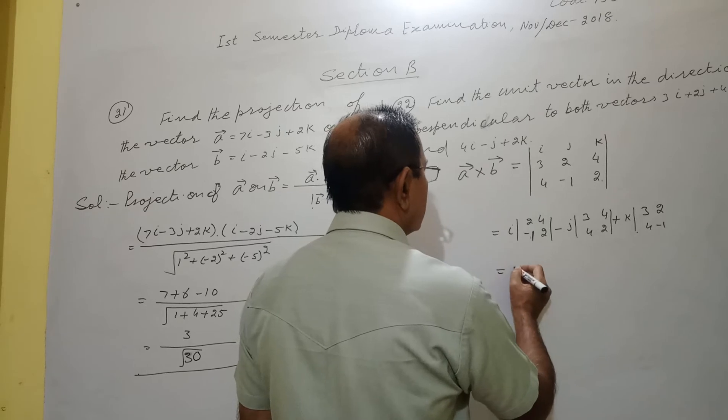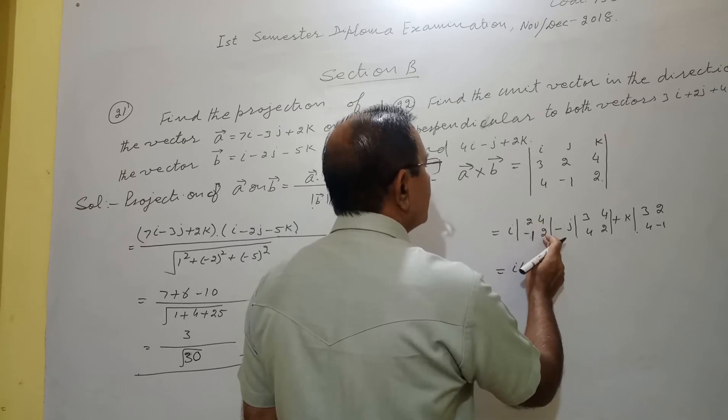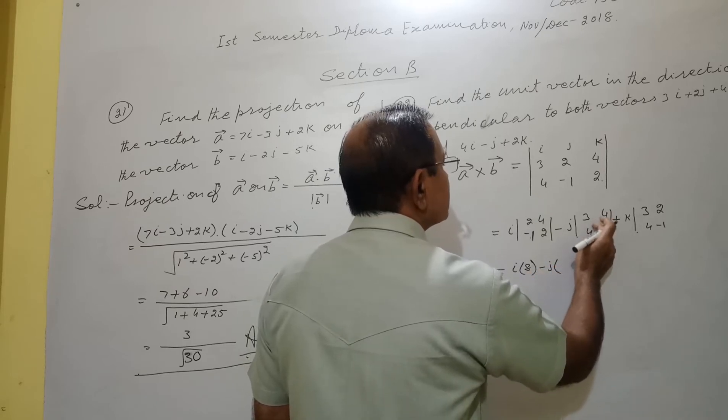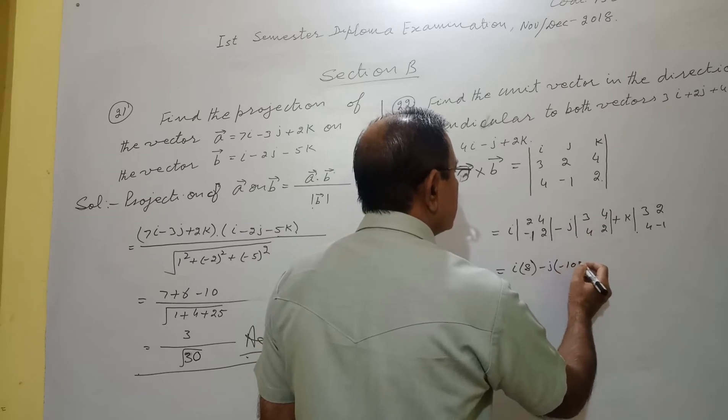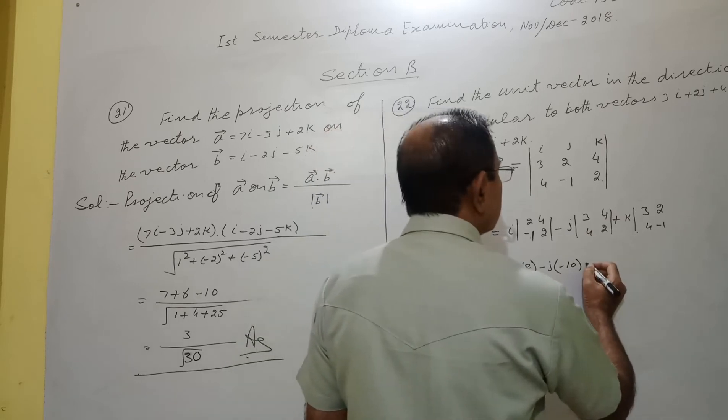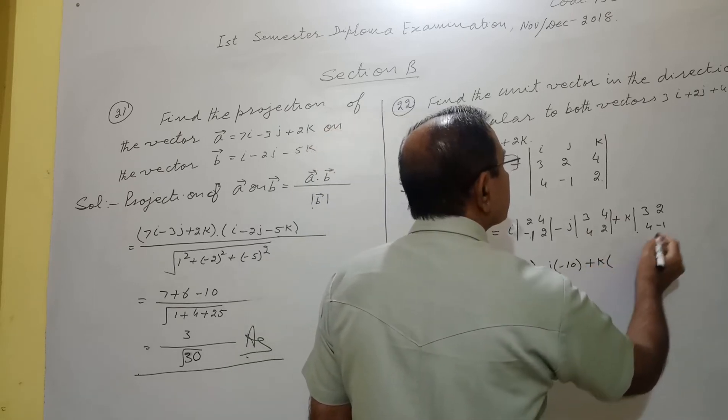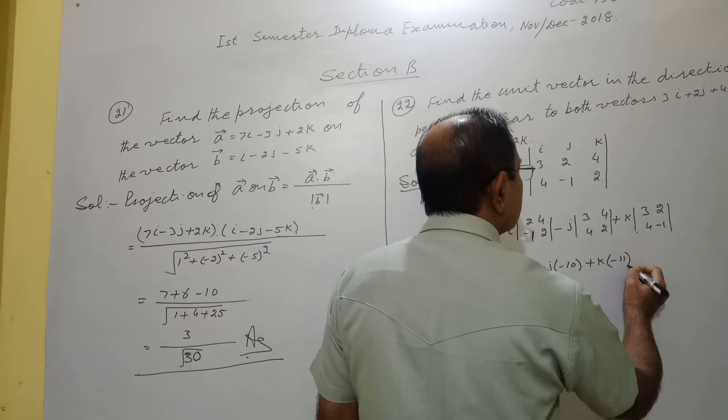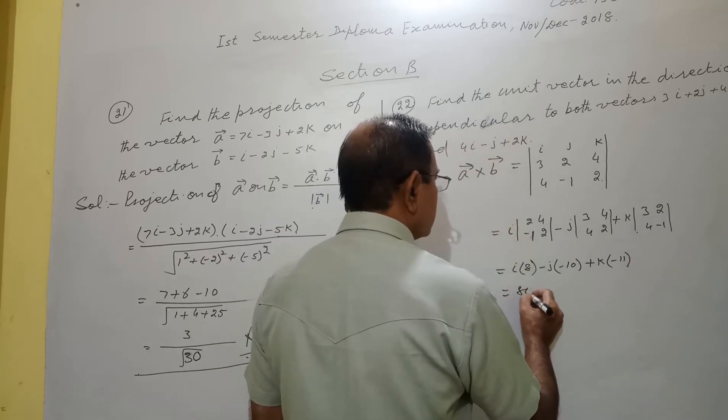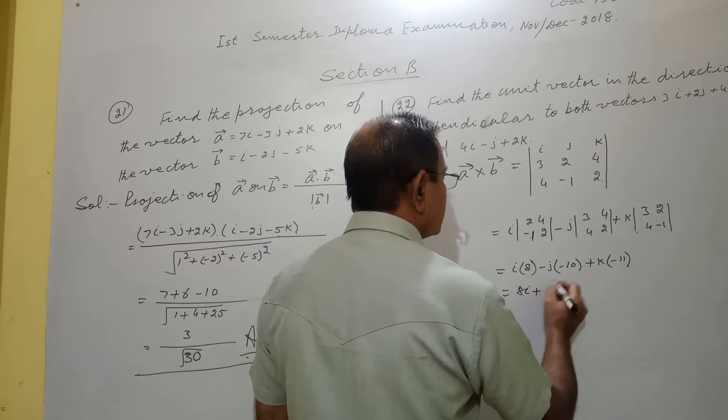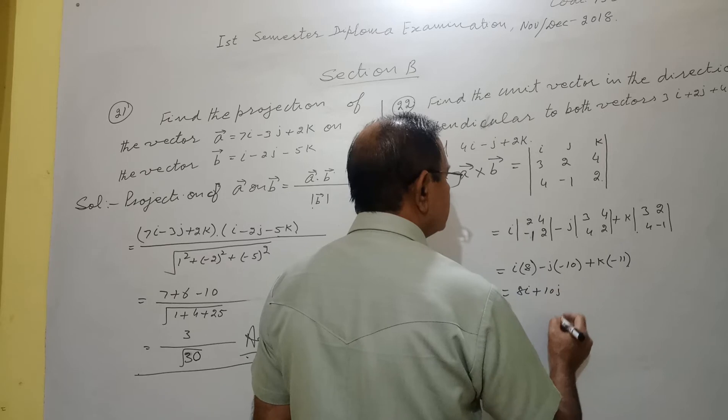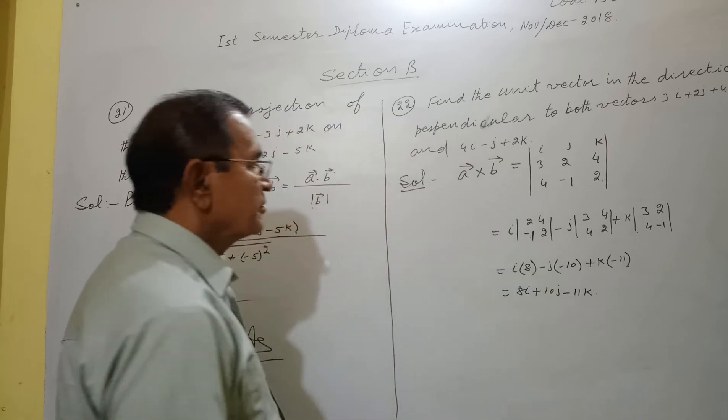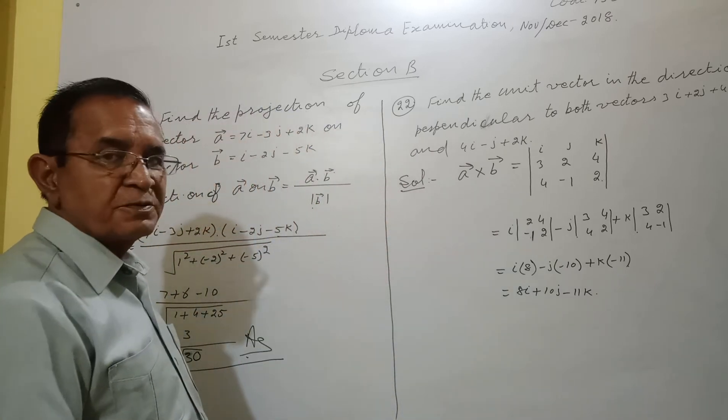It equals i times 4 plus 4 equals 8, minus j times 6 minus 16, which is 3 times 2, 6 minus 16, minus 10, plus k times minus 3 minus 8, minus 11. It equals 8i plus 10j minus 11k. So this is the cross product of a and b.